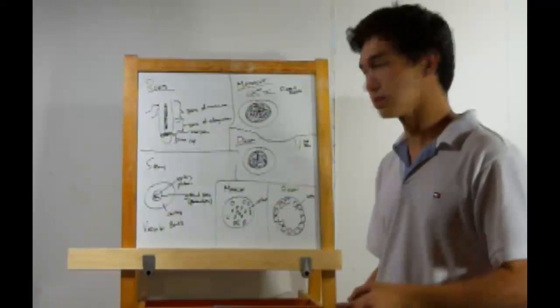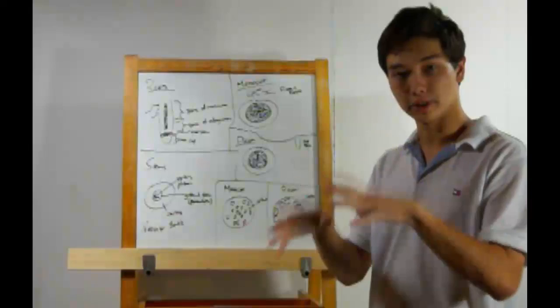All right, first up, the monocot. These have a fibrous root setup. Their roots, if you look at them, are going to be spread kind of everywhere. And here's a horizontal cross-section of one of those.